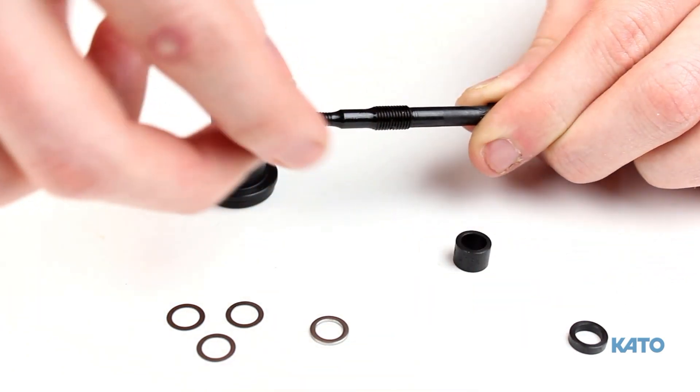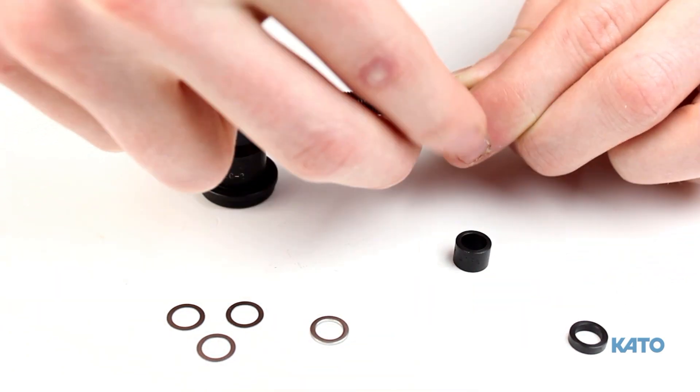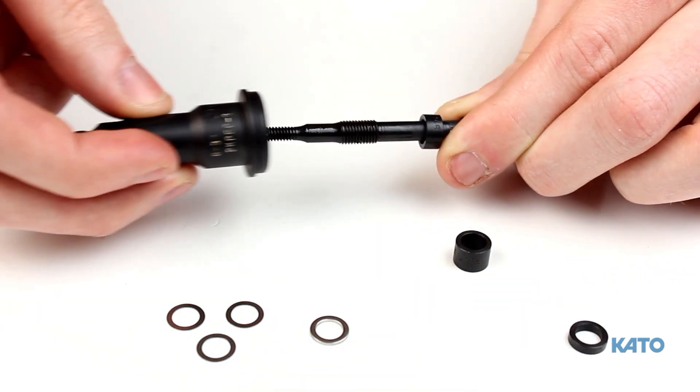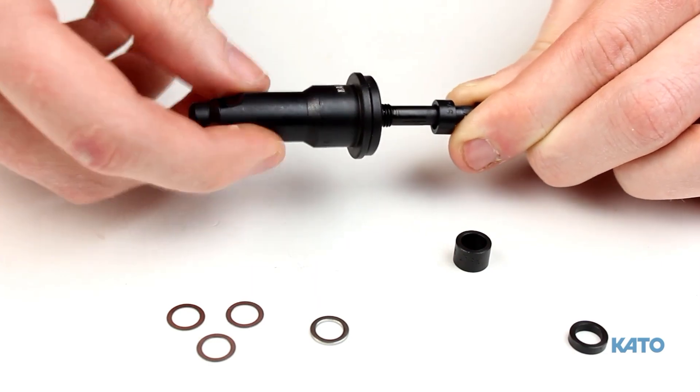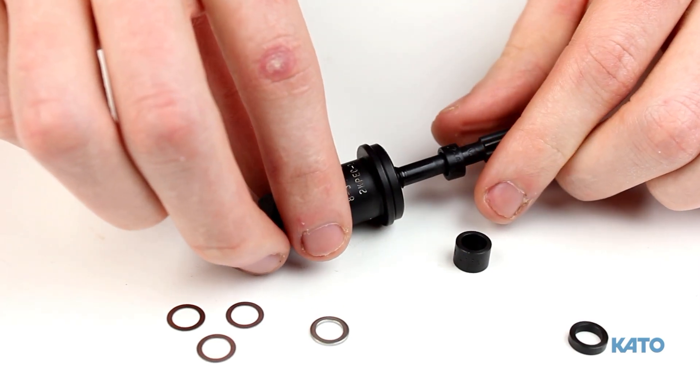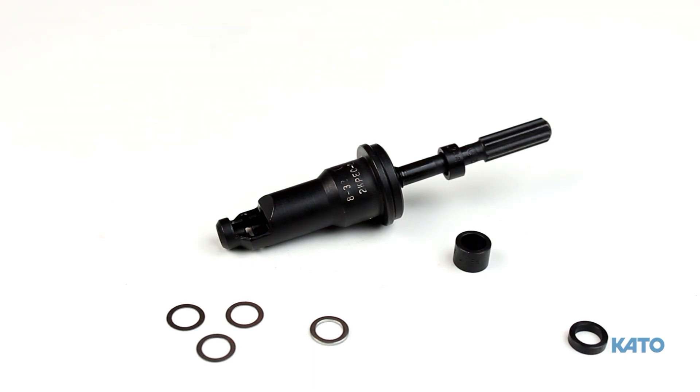Thread the mandrel completely out of the prewinder body. Slide the medium spacer over the mandrel. And then thread the mandrel back into the prewinder body. Do not thread the mandrel all the way back. Threading it about halfway is good enough.